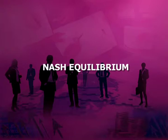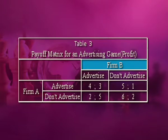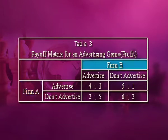Now let us discuss the next topic: Nash equilibrium. Not all games have a dominant strategy for each player or firm. In fact, in real life, it is more likely that one or both players do not have a dominant strategy. This is shown in this table. Here, firm B has a dominant strategy but firm A does not. The dominant strategy for firm B is to advertise irrespective of whether firm A advertises or not.